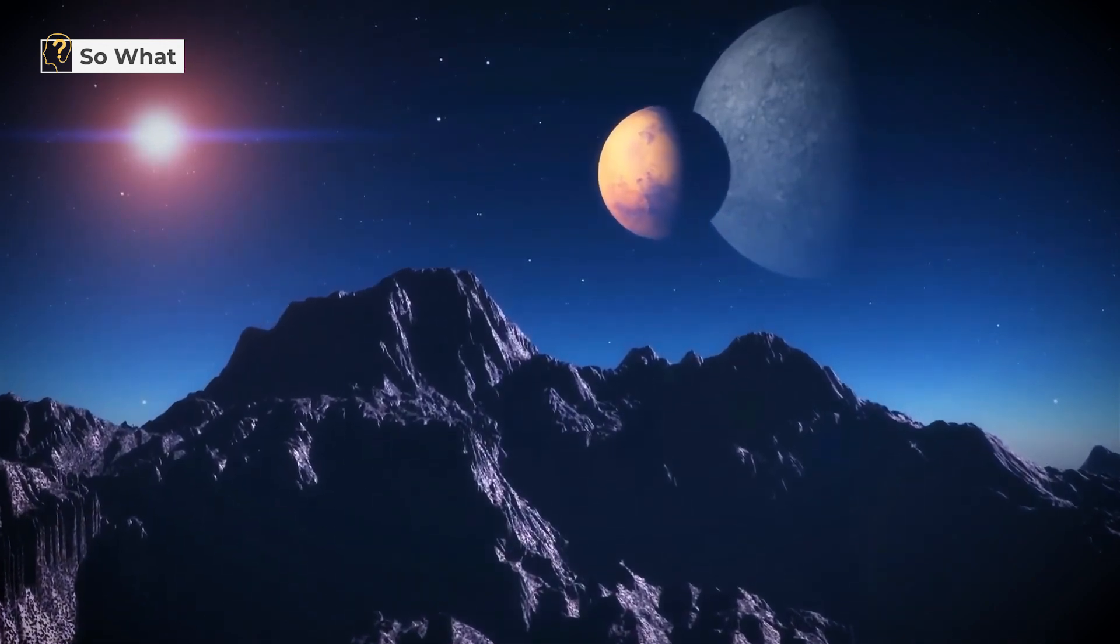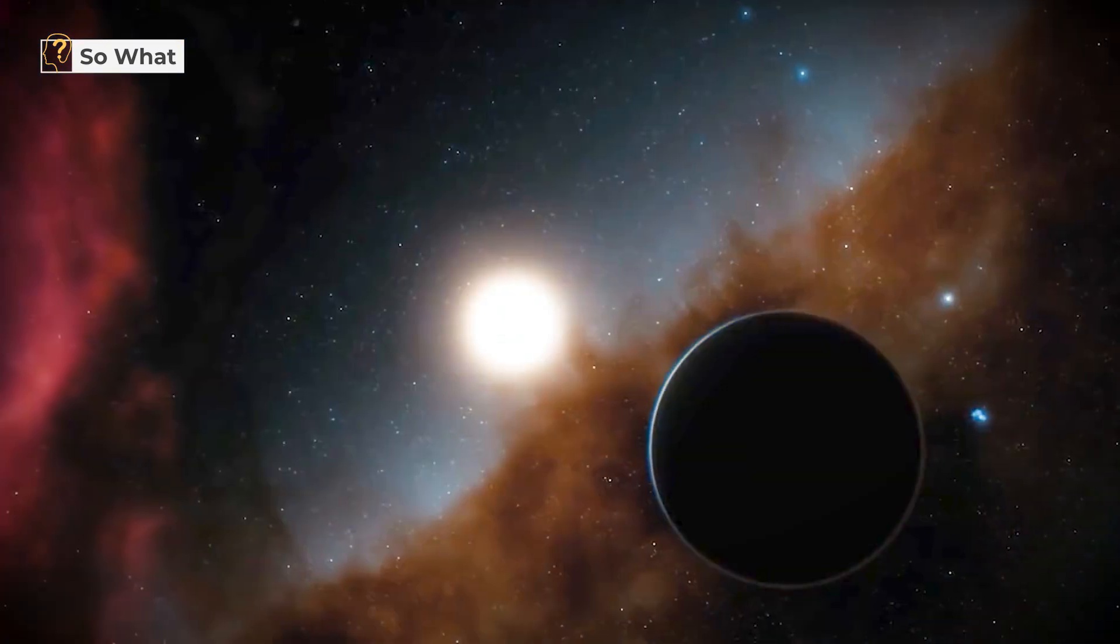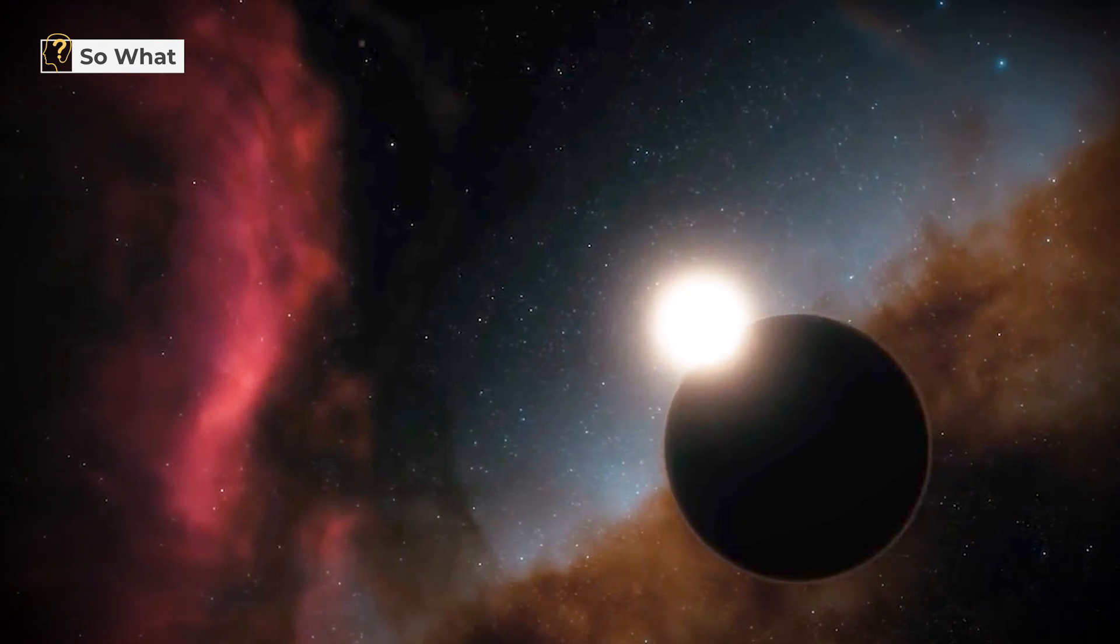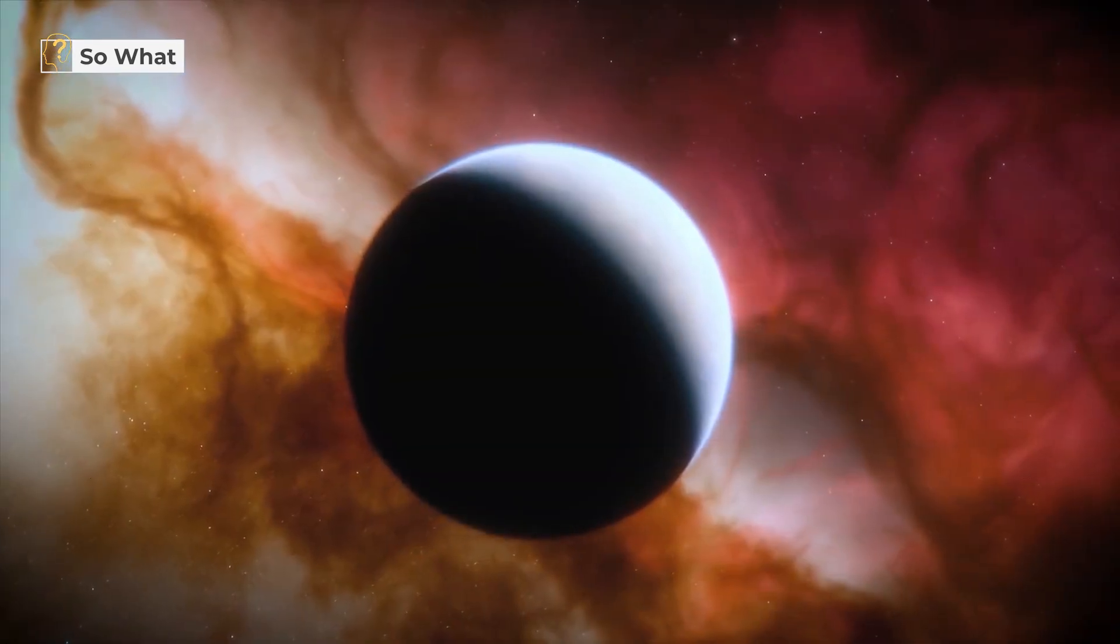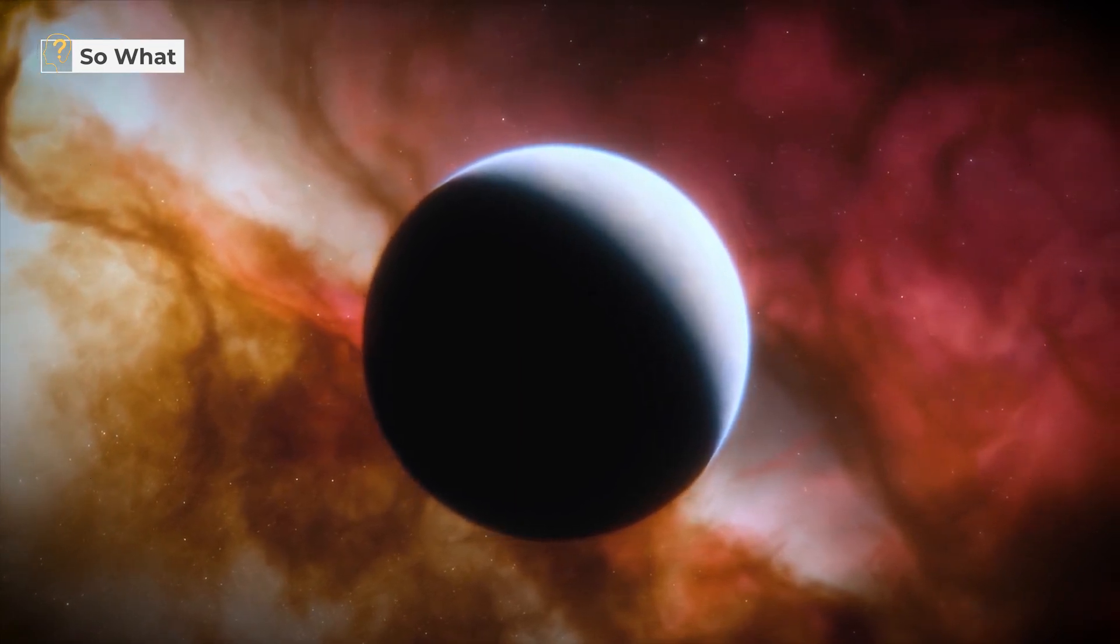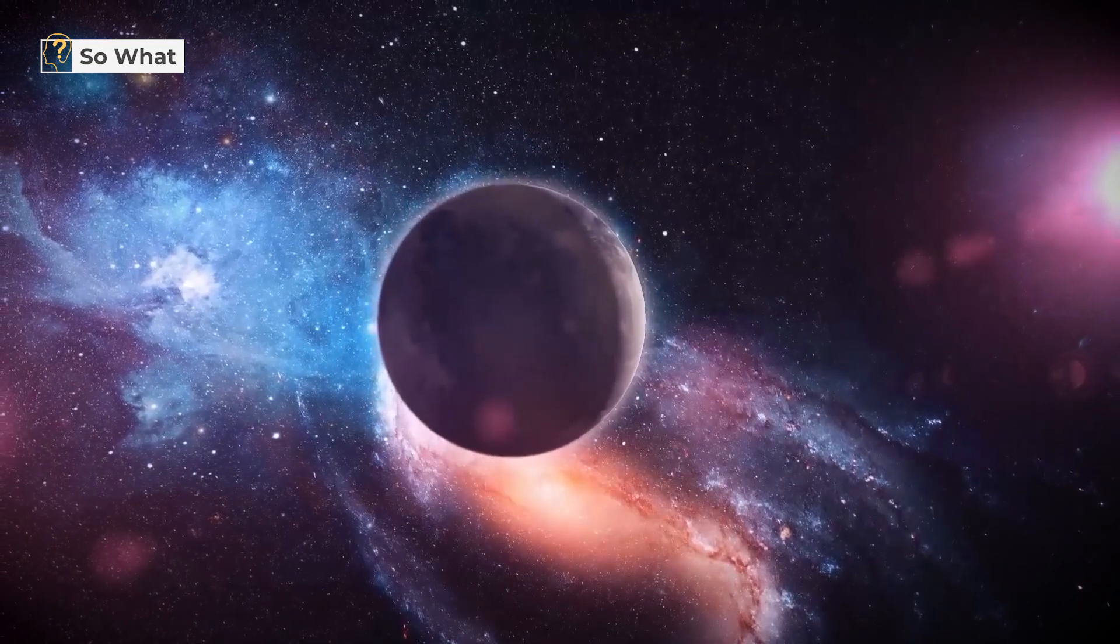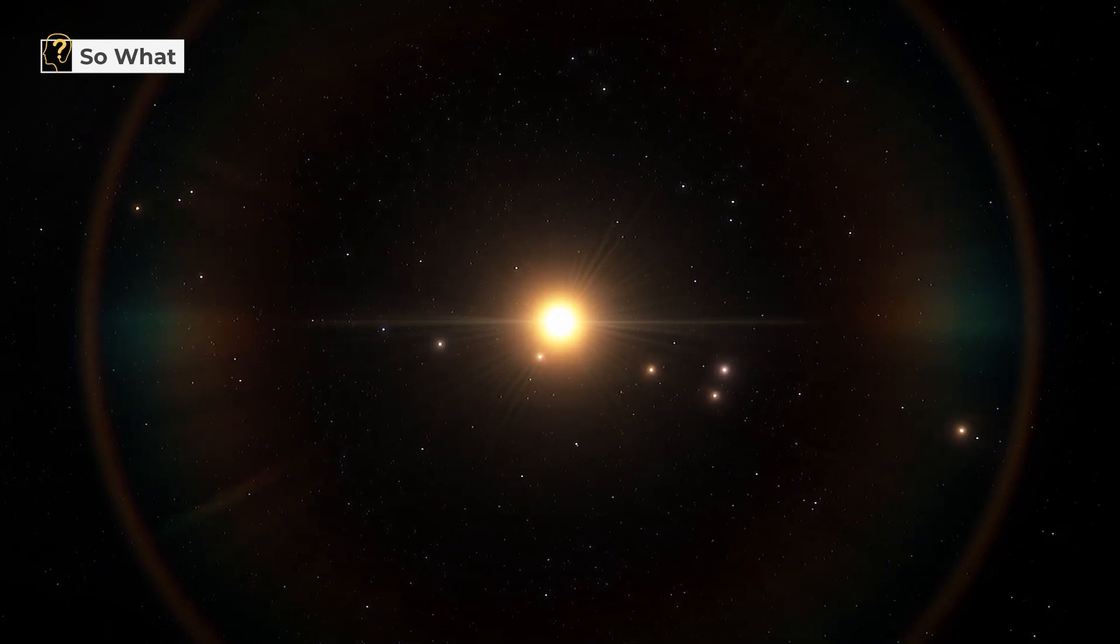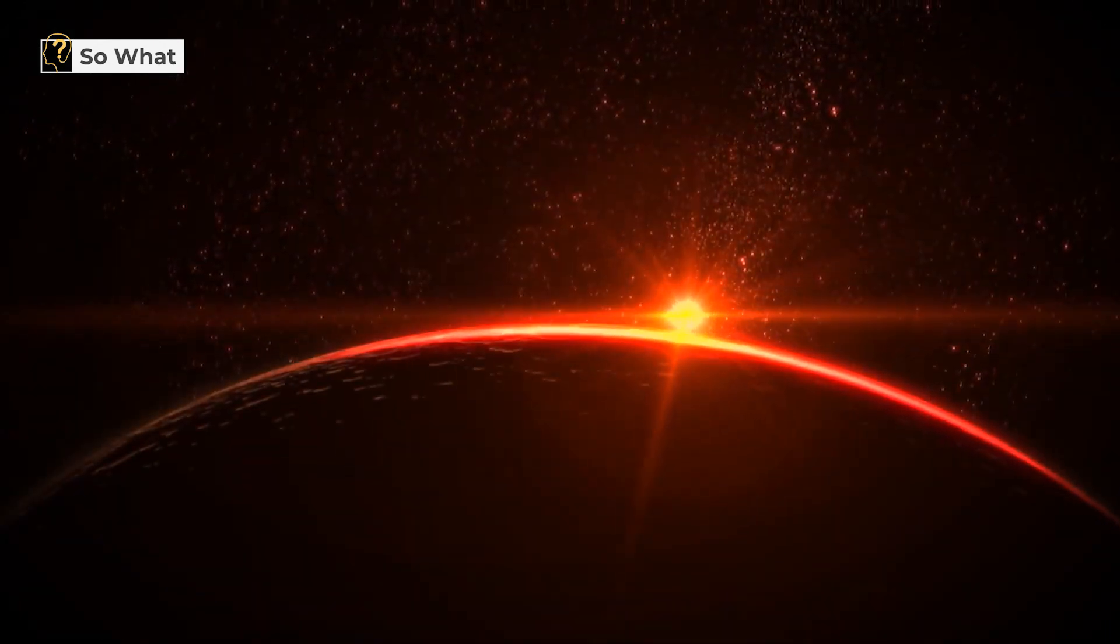On Kepler-1649c, there would be no seasons. We'd have to get acclimated to the fact that a whole orbit takes just 19.5 Earth days. It might also be tidally locked, meaning one side of the planet is always facing the sun and the other is always facing space. Living on a planet around a red dwarf star might also be dangerous. Red dwarf stars occasionally produce large flares that bathe an orbiting planet in UV radiation and cause significant temperature changes.